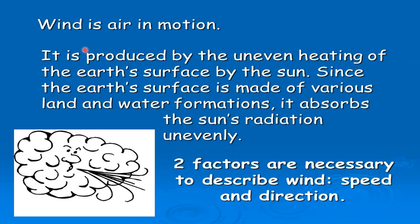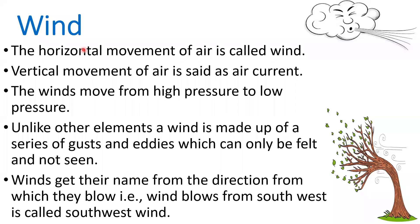What is wind? Wind is air in motion. It is produced by the uneven heating of the earth's surface by the sun. Since the earth's surface is made of various land and water formations, it absorbs the sun's radiation unevenly. Two factors are necessary to describe wind: speed and direction. The horizontal movement of air is called wind, while the vertical movement of air is called an air current. Winds always move from high pressure to low pressure.